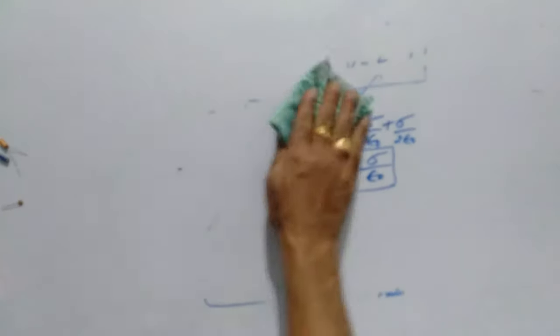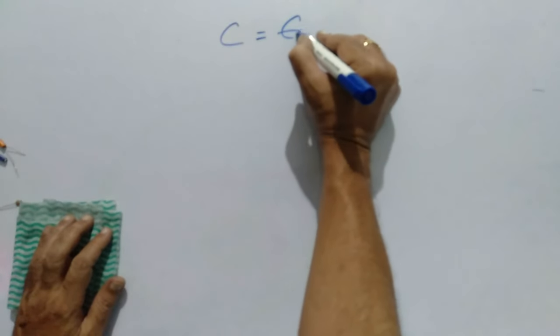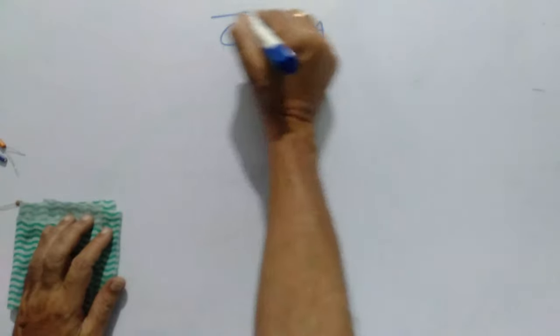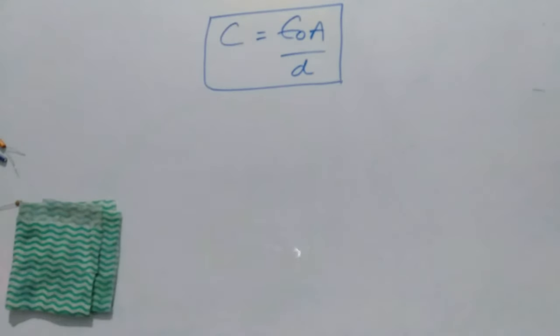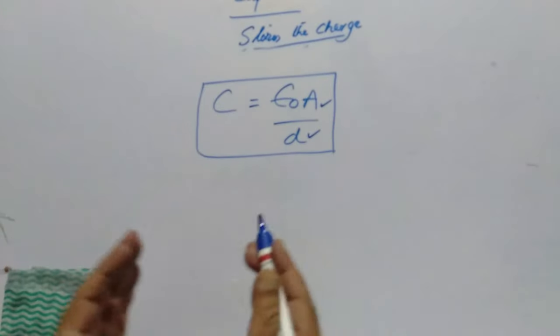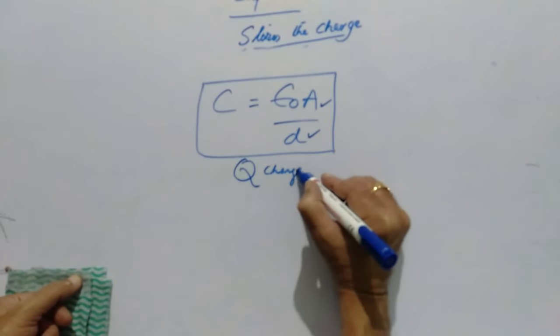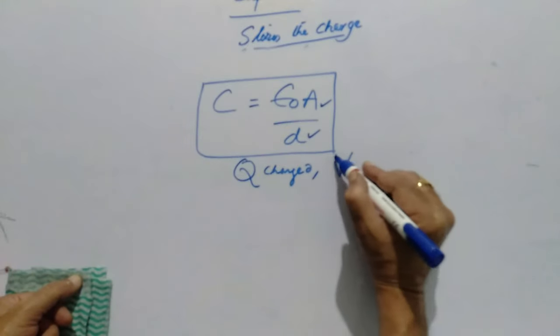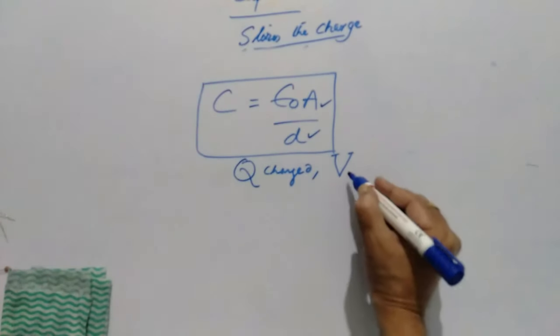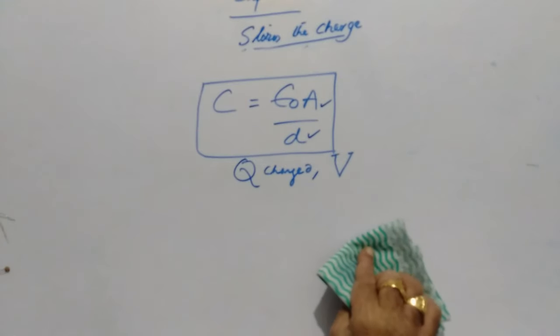If you analyze the result for capacitance, it is beautiful. The capacitance C = ε₀A/D depends purely on the area and the distance between the plates. It depends neither on the charge stored on the capacitor nor on the potential difference of the source with which it is charged. That is the advantage of this formula.